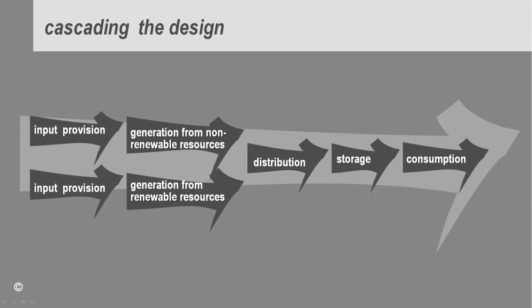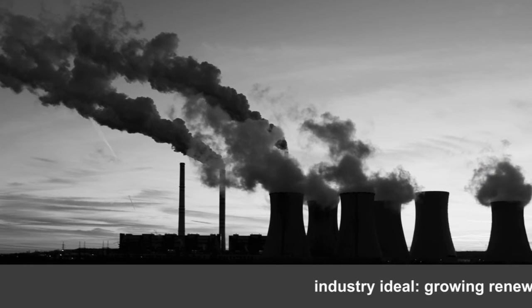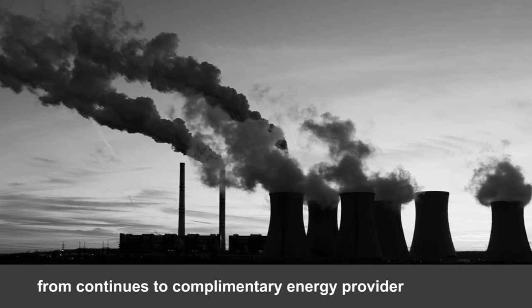As illustrated by this figure, once an industry is redesigned — in other words, the aims in terms of desired outcomes and key strategies have been determined — the industry aim is cascaded into each sub-industry and their associated organisations, who then change their own business operations accordingly. For example, in the case of the coal industry, the industry ideal of growing renewable energy provision could imply a change in the business model from being a continuous energy provider to becoming a complementary energy provider to the renewable industry.